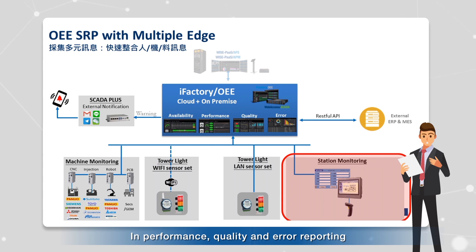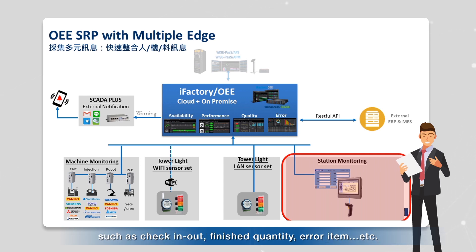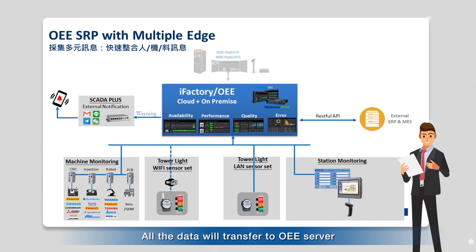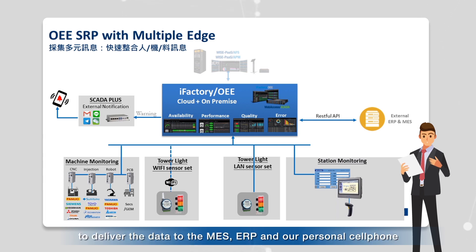For performance, quality, and error reporting, Advantech provides an HMI to import work order and production information, such as check-in, check-out, finished quantity, error items, etc. All data is transferred to the OEE server. The OEE server includes a database, dashboard, and API to deliver data to MES, ERP systems, and personal mobile devices.